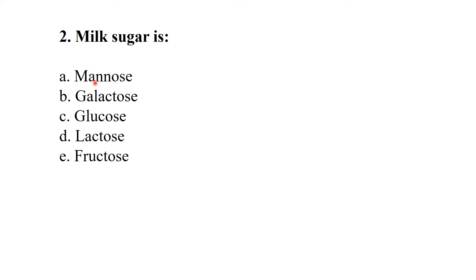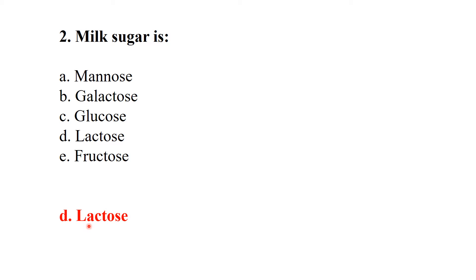Milk sugar is the sugar that is present in milk. The options are: A mannose, B galactose, C glucose, D lactose, E fructose. The sugar present in milk is called lactose, so the best answer is lactose. It is also called milk sugar.